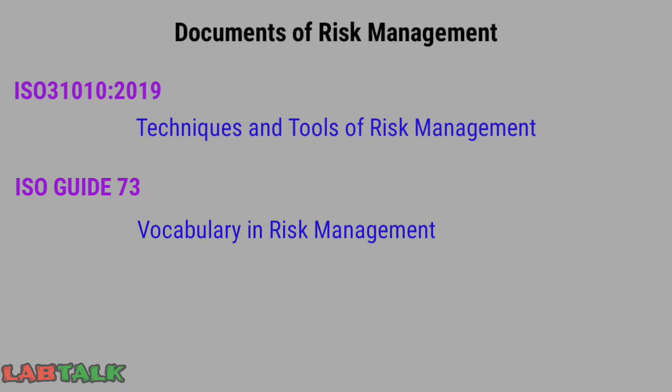The next document is ISO Guide 73, which deals with vocabularies in risk management — that is, various terms, definitions, and their meanings with respect to risk management. This document covers various terms, definitions, and vocabularies involved in risk management, along with their explanations and interpretations.